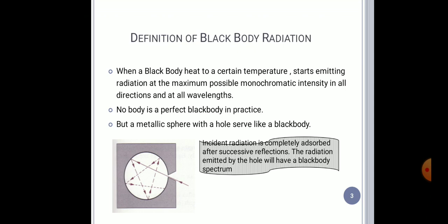Now what happens is that when this radiation is emitted, it develops a wavelength spectrum which depends on the temperature and the body type. It does not depend on the body, but one other thing which is important is that no body is a perfect ideal black body.